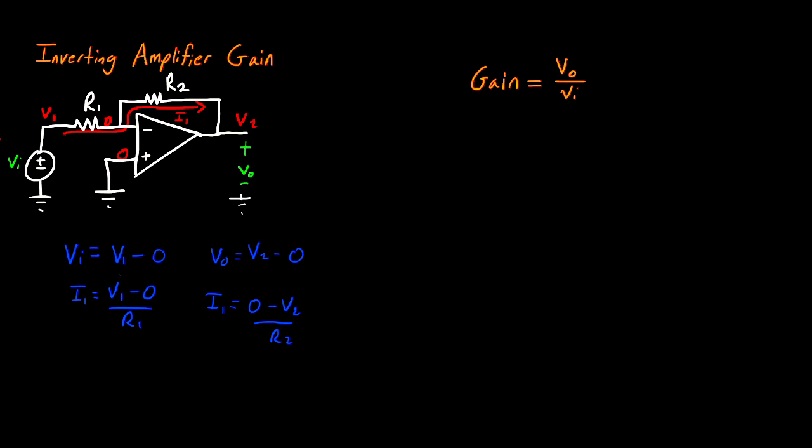Now we know that V1 and V2 are VI and VO, so I'll substitute VI for V1 and VO for V2. Because both Ohm's law equations are in terms of I1, I can equate them together. So VI divided by R1 equals negative VO divided by R2.